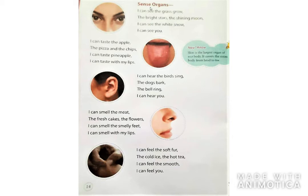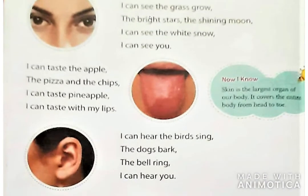Now it is sense organs. Tell me, how many sense organs are there? There are 5 sense organs: eyes, tongue, ear, nose and our skin. First is eyes. I can see the grass grow, the bright stars, the shining moon, I can see the white snow, I can see you.